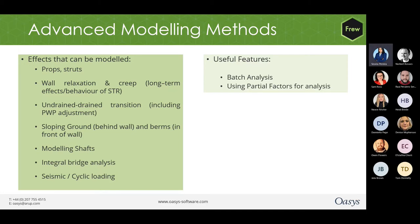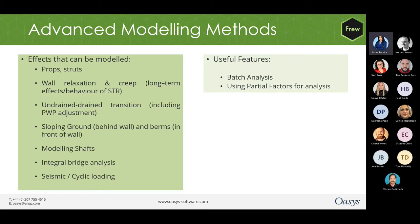That was a quick recall of all that was discussed in the first part of our previous webinar. Now moving on to some advanced modeling techniques and useful features in FRU. The effects that can be modeled include props and struts, wall relaxation and creep, undrained-drained transition including pore water pressure adjustment, sloping ground behind the wall, berms in front of the wall, modeling shafts, integral bridge analysis, and seismic or cyclic loading. We shall also have a brief look at batch testing and using partial factors for analysis.